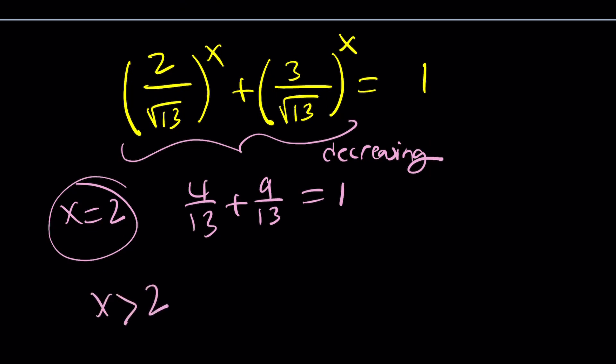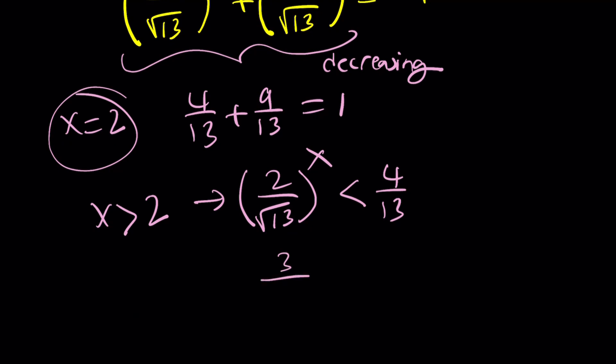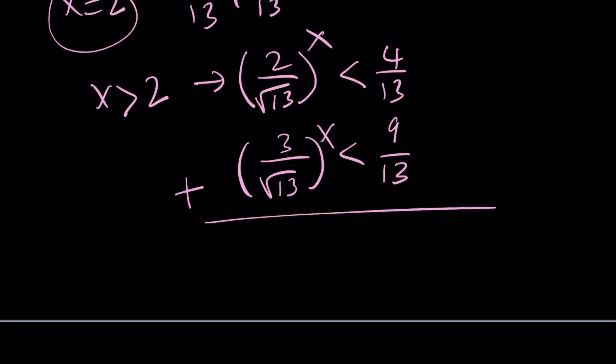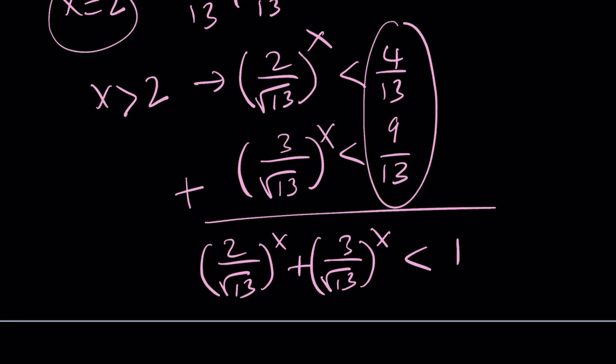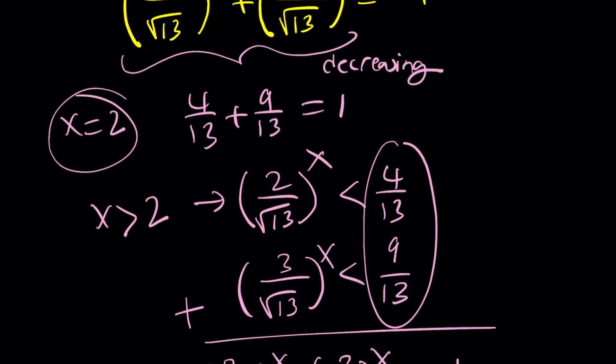Let's look at it from another perspective. If x is 2, this is satisfied. What if x is greater than 2? When you raise a number less than 1 to a power higher than 2, it's going to be less than its square. The number gets smaller and smaller. When you add these inequalities side by side, the sum is going to be less than 1. If x is greater than 2, our left-hand side is less than 1.